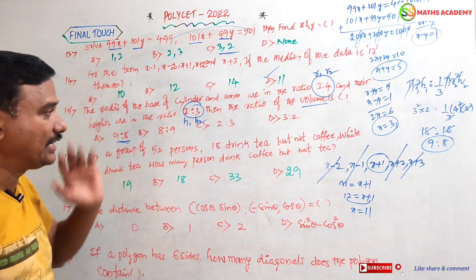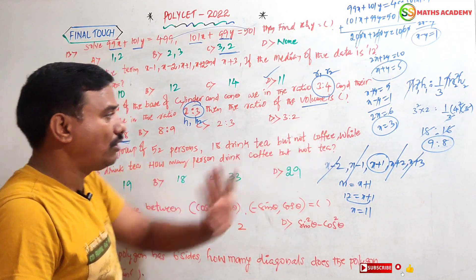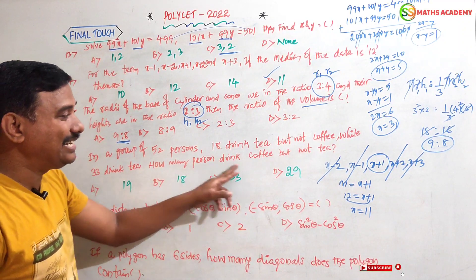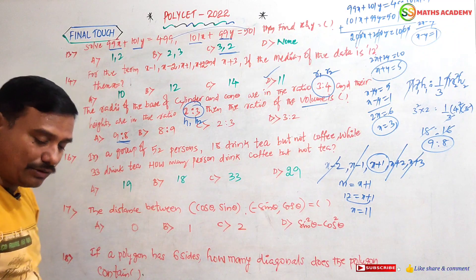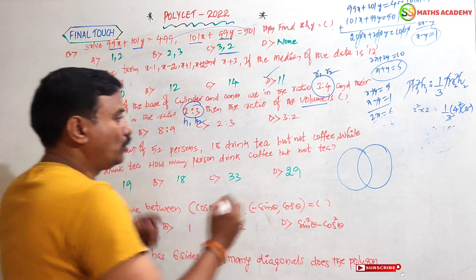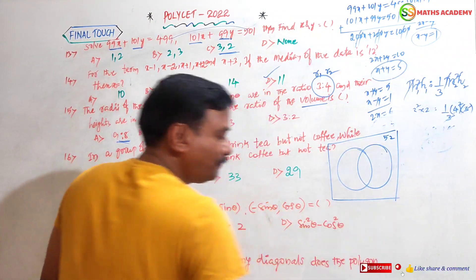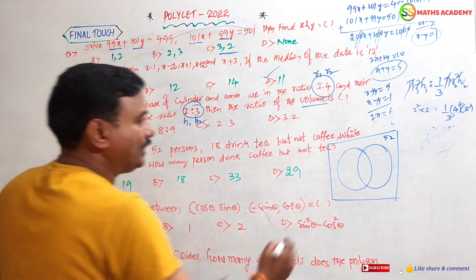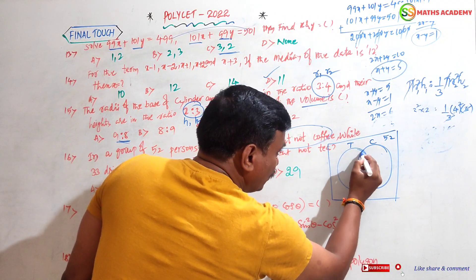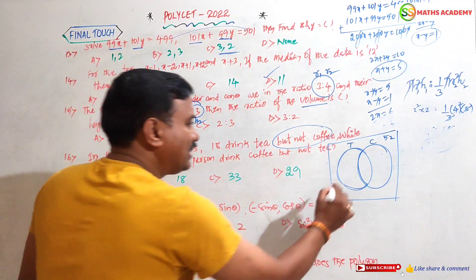In a group of 52 persons, 18 drink tea but not coffee, while 33 drink tea. How many drink coffee but not tea? I am using Venn diagrams. Total 52 persons are there. 18 drink only tea — that is the tea-only region, not overlapping with coffee.